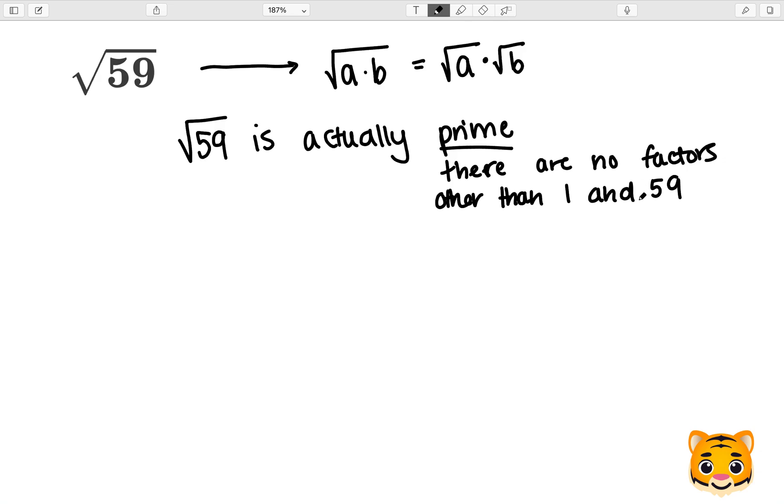So we actually cannot reduce the square root of 59 into any smaller values and reduce it, but we can estimate the square root of 59 by looking at perfect squares near that value.